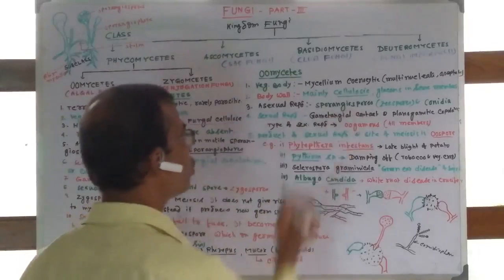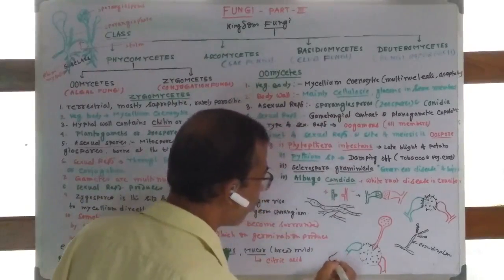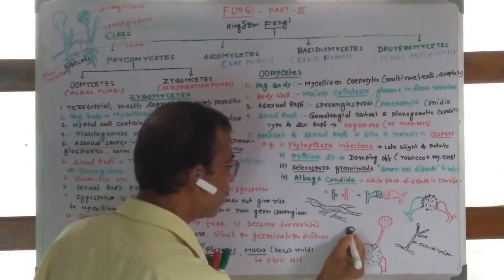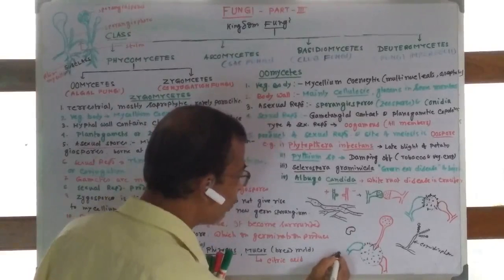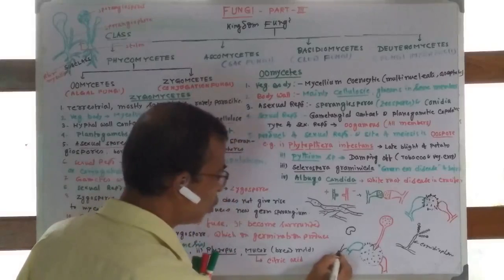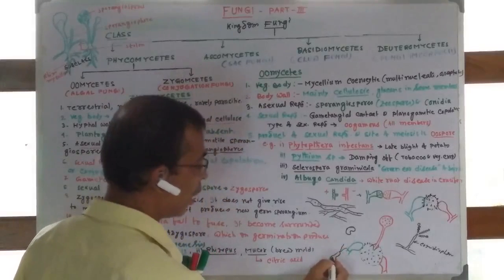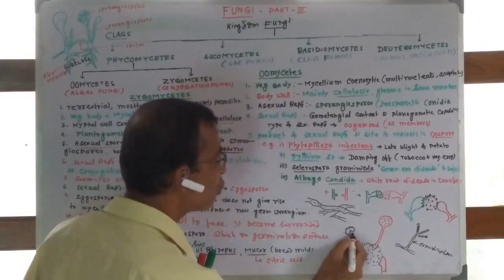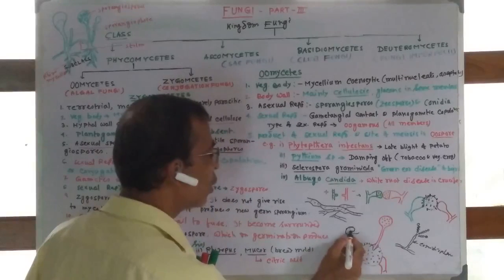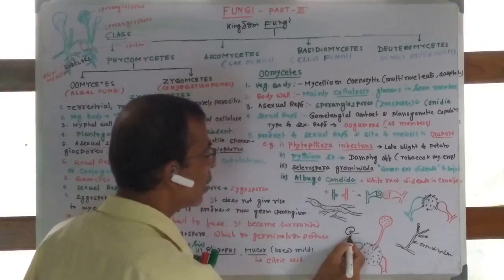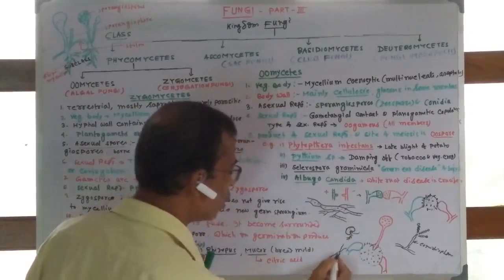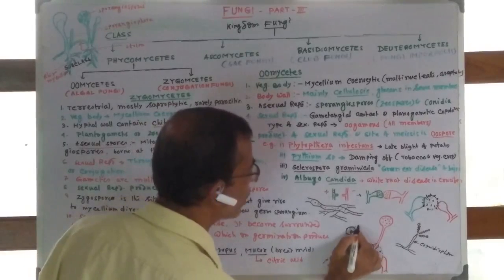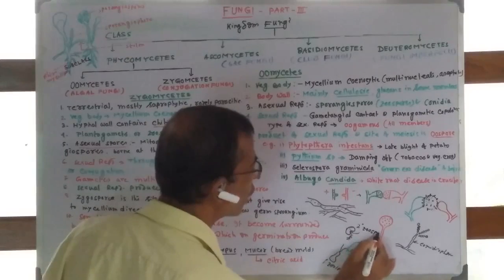Zoospores may be pyriform, that is pear-shaped, or may be reniform, bean-shaped. When pyriform, they bear isokont flagella - two same types of flagella that are hairless. When reniform, they possess two unequal heterokont flagella: one is whiplash (hairless) and the other is tinsel type (hairy). The pyriform is called primary zoospore and the reniform is called secondary zoospore. The phenomenon of producing two types of spores is called diplanetism.